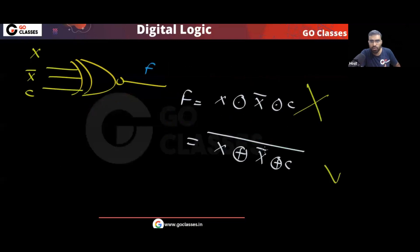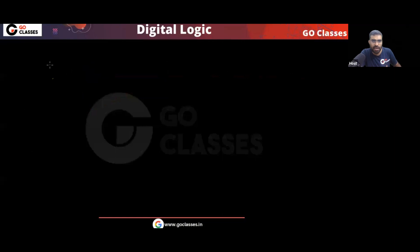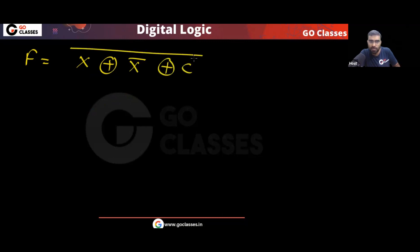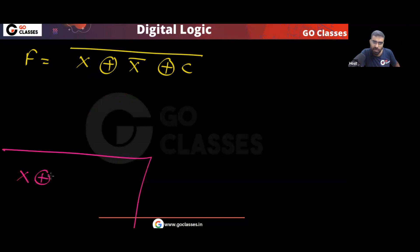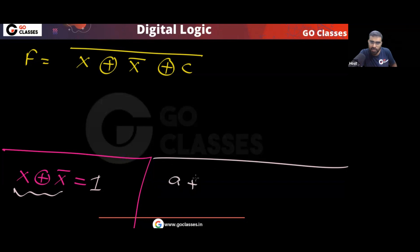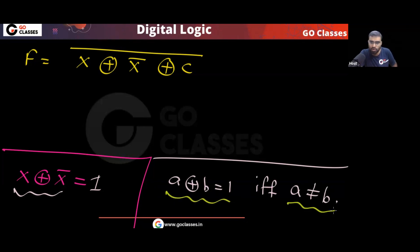So now you can see: F will be equal to (X XOR X̄ XOR C), whole complement. Now what does X XOR X̄ become? That will always be one — because X XOR B equals one if and only if they are different. Since X and X̄ are always different, X XOR X̄ is always equal to one.